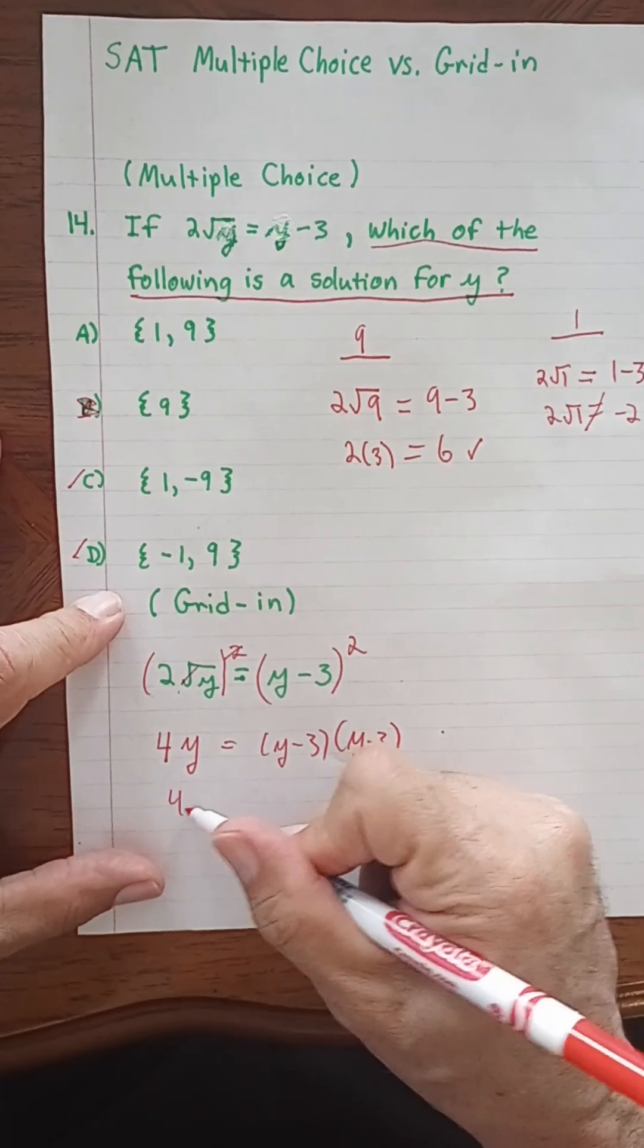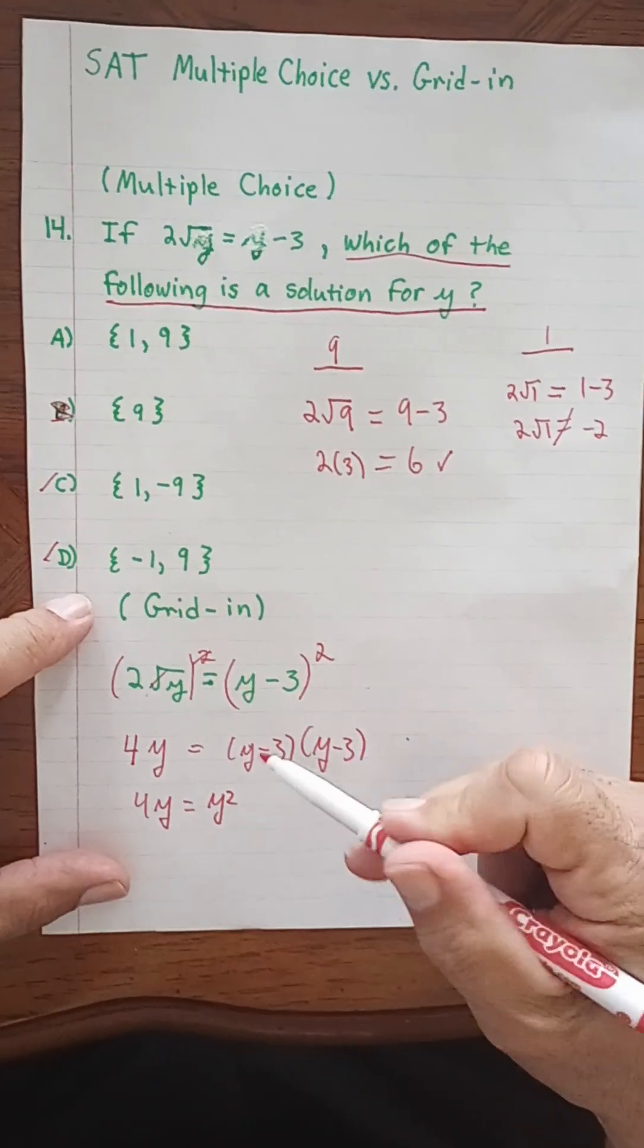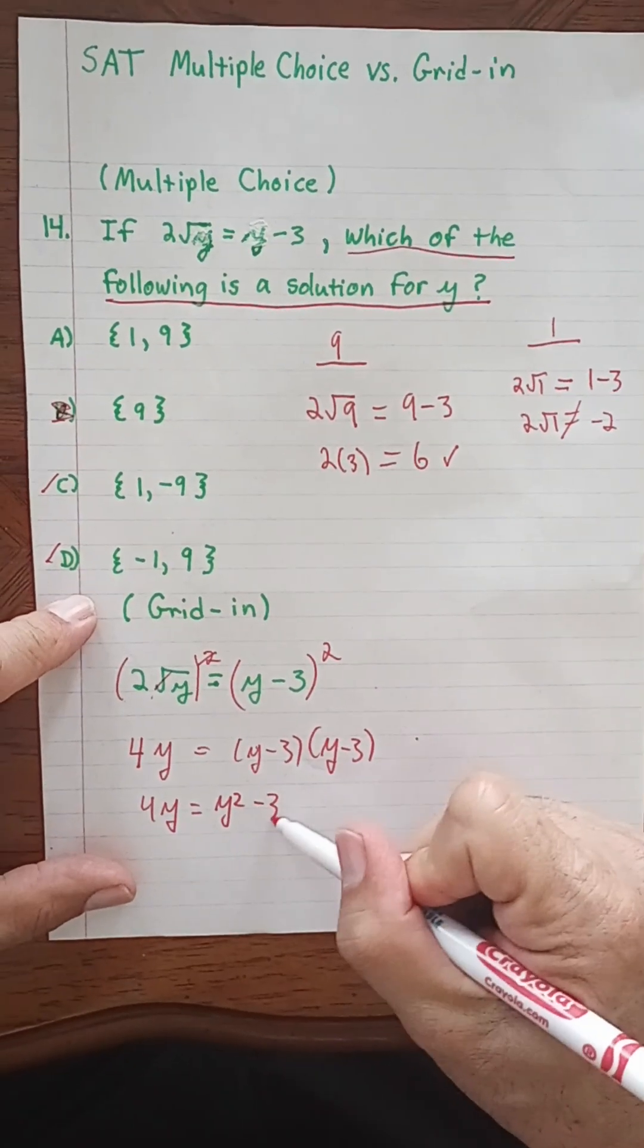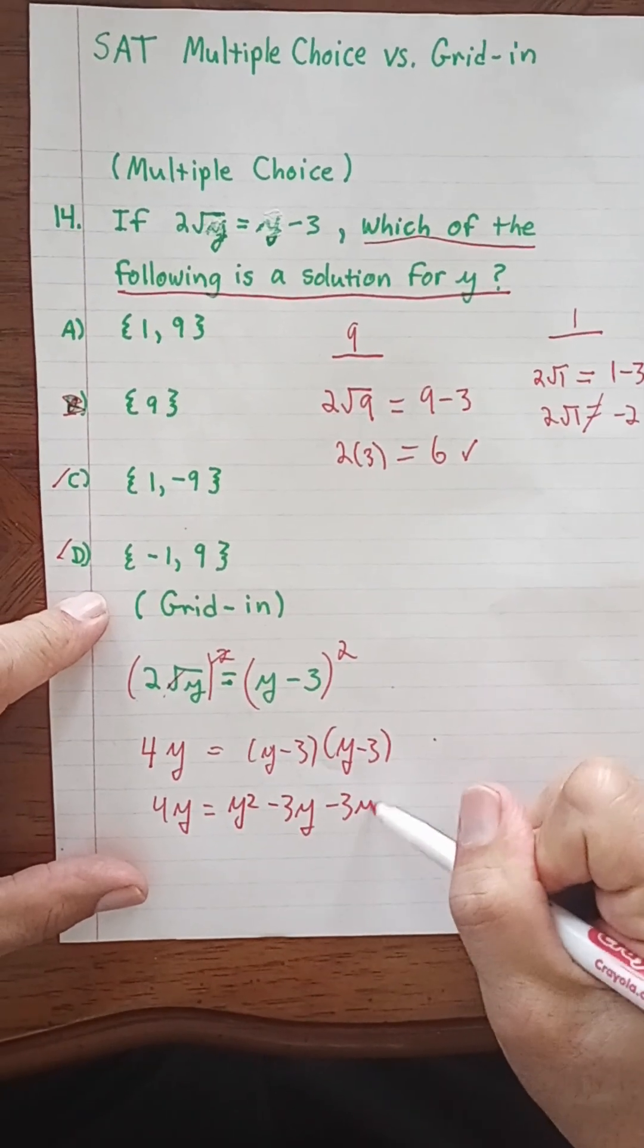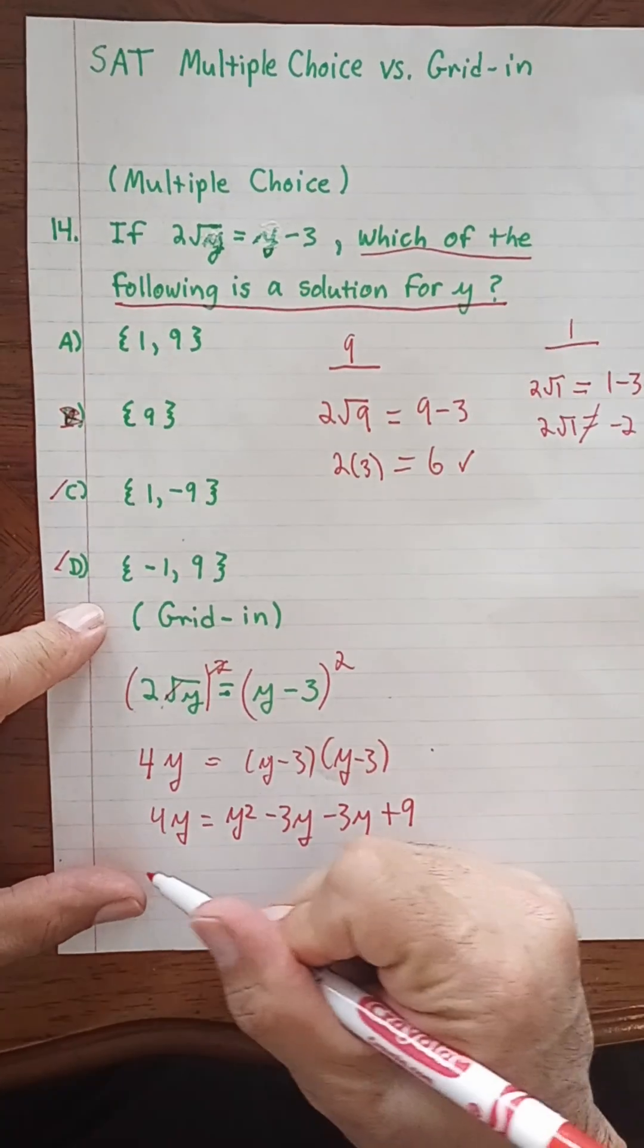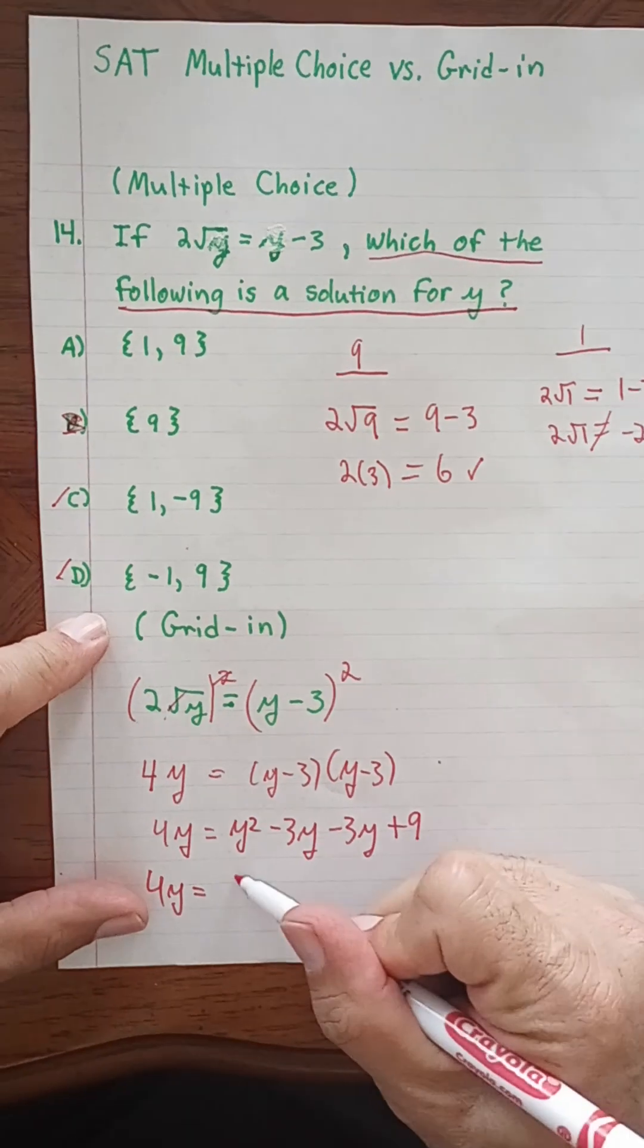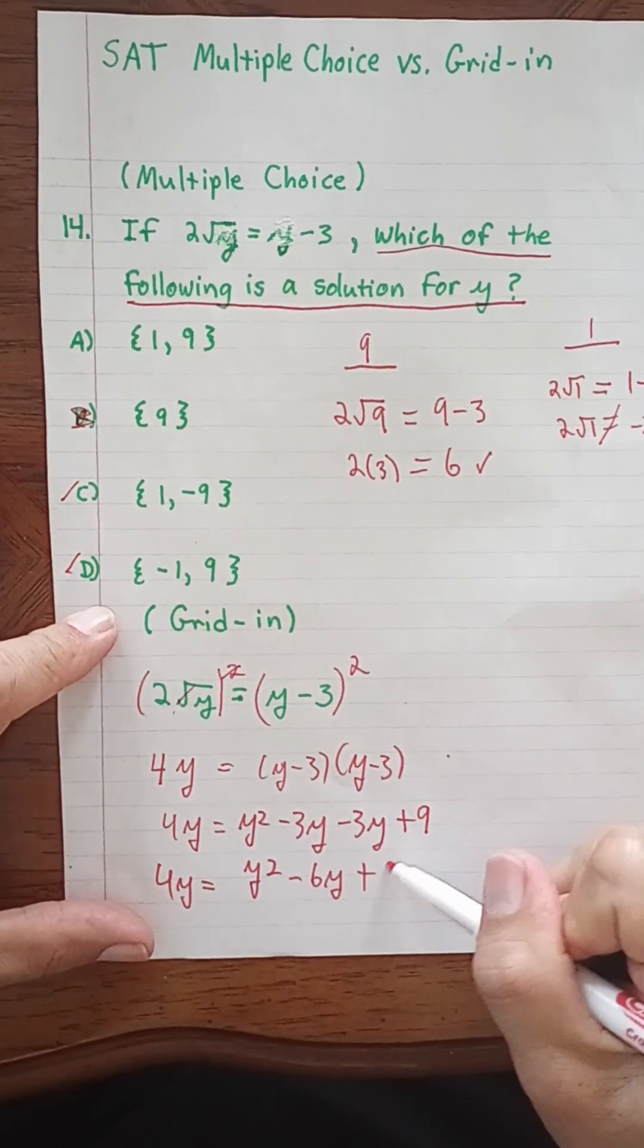This would be 4y equals y squared. We're going to foil that. Y times y is y squared, y times negative 3 is negative 3y, negative 3 times y is negative 3y, and negative 3 times negative 3 is positive 9. So 4y would equal, combine like terms, y squared minus 6y plus 9.